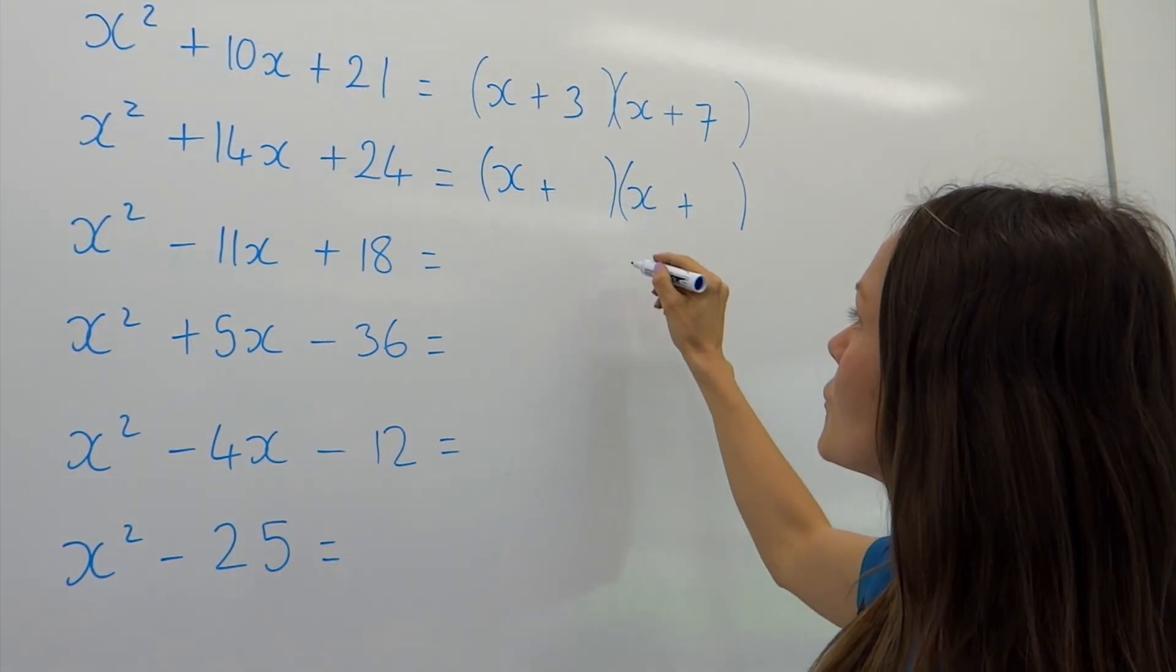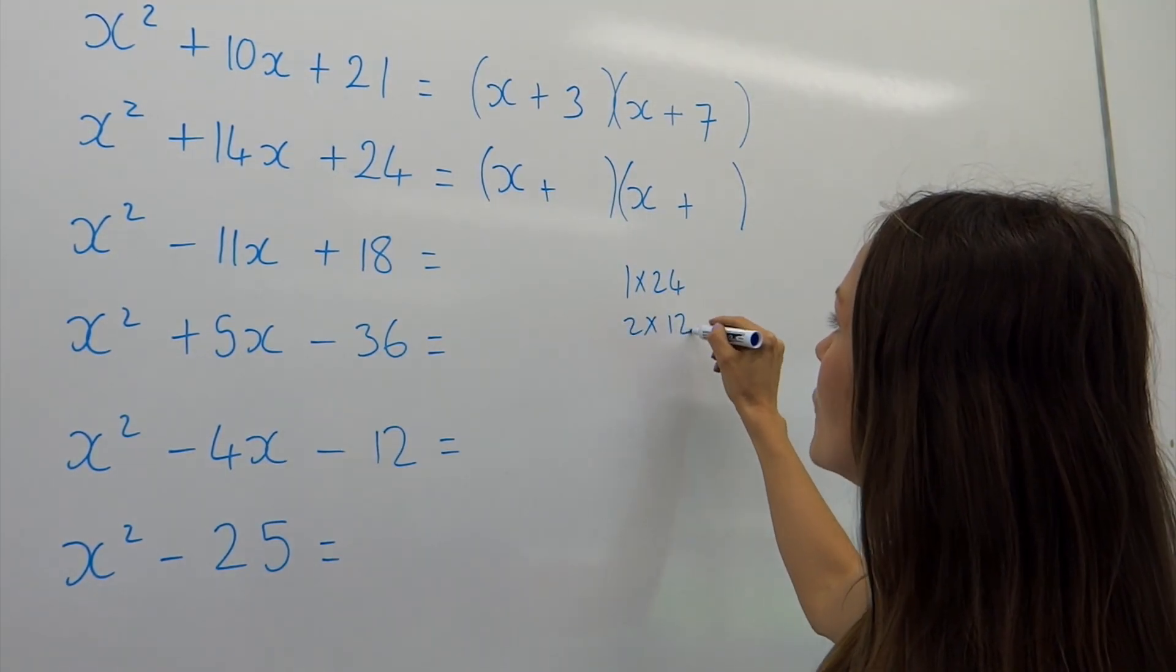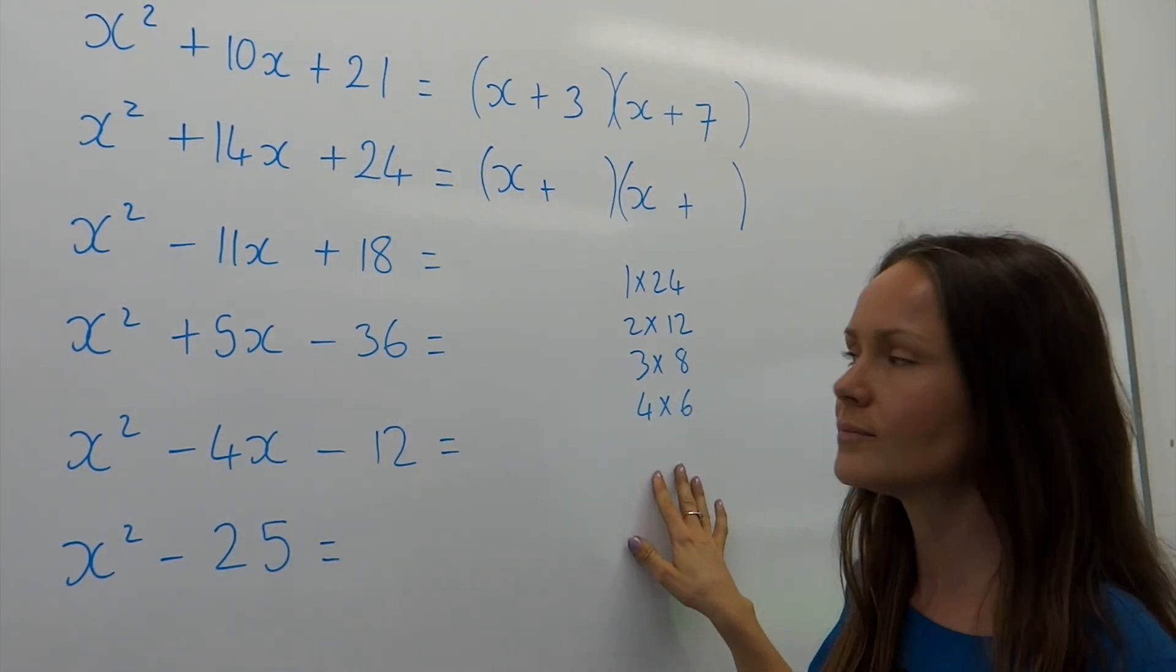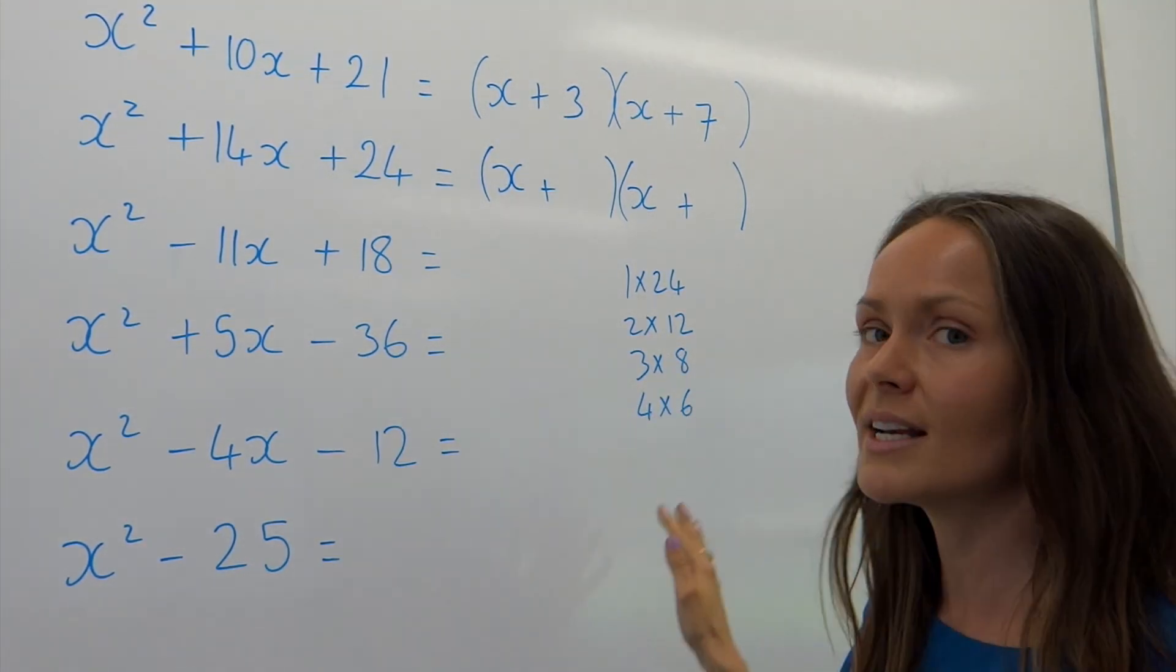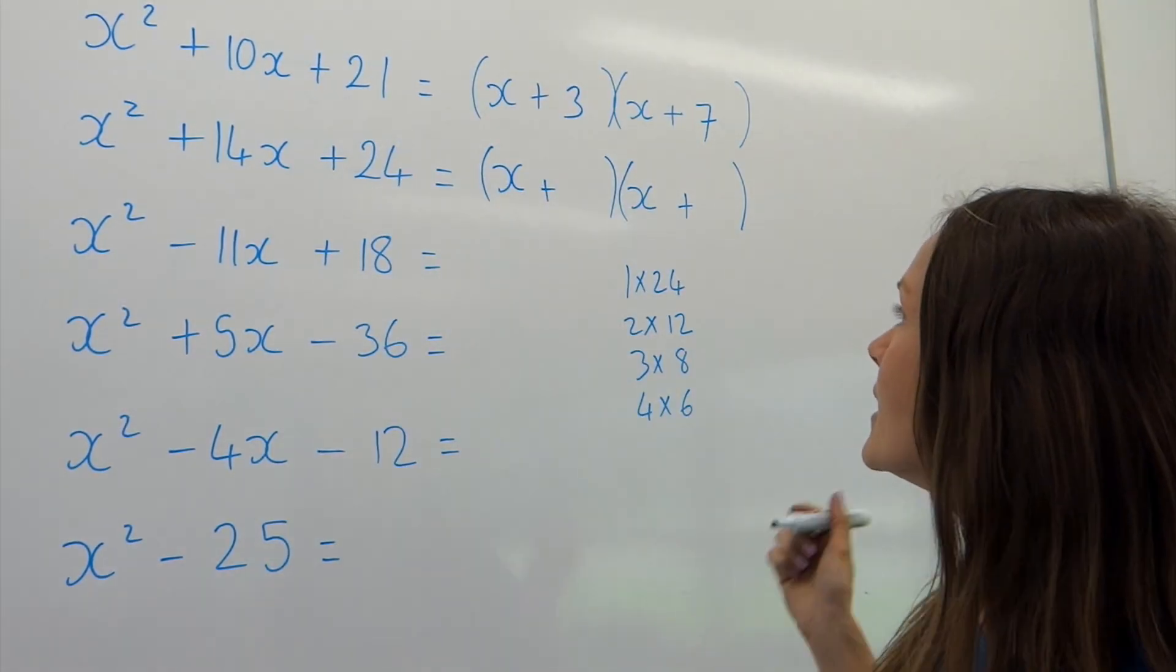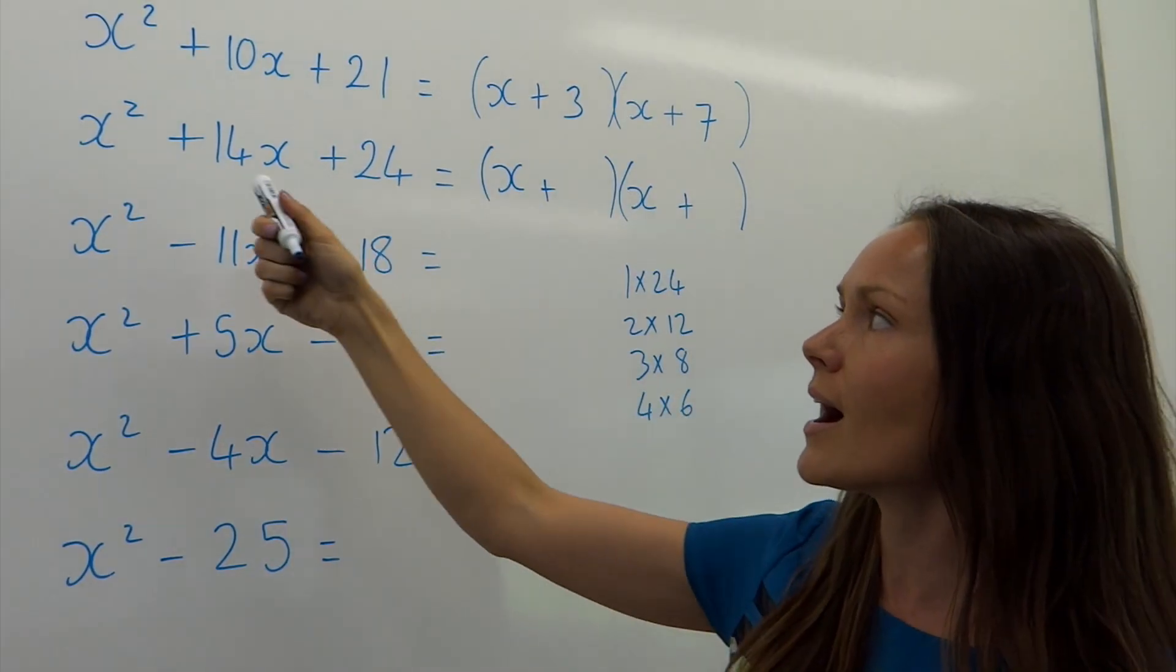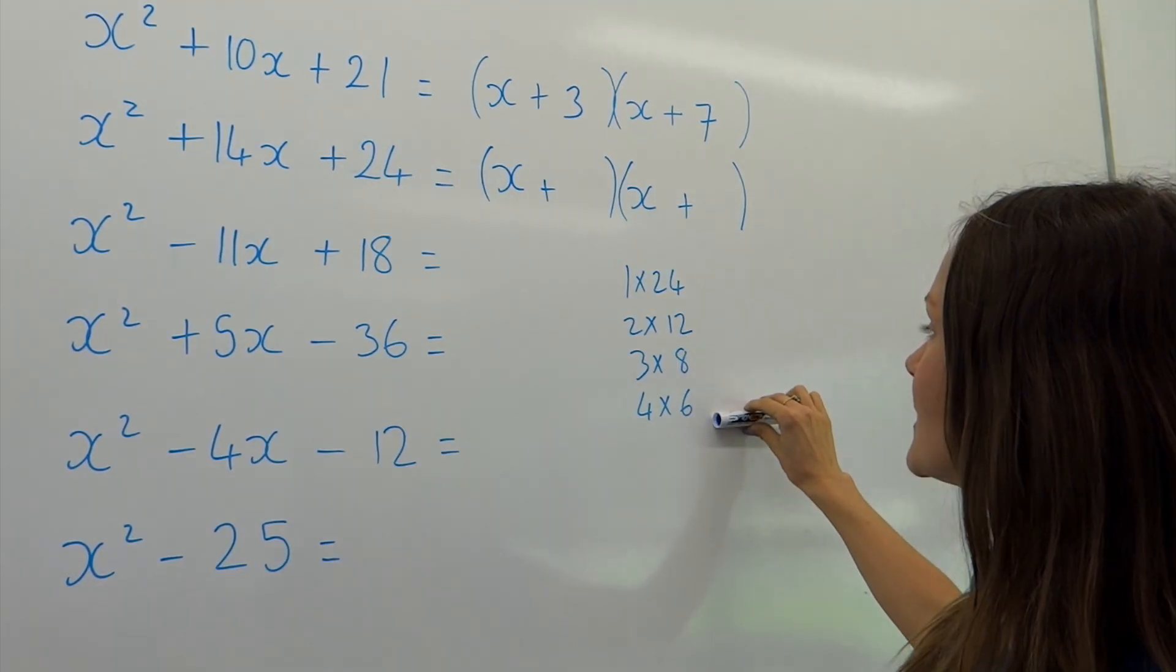So think of the factors of 24. We've got 1 times 24, 2 times 12, 3 times 8, 4 times 6. Those are all the factors of 24. So I just know those because I know my times tables. So it is really important to know your times tables because you'll be much quicker at doing these type of questions. Now remember, these two numbers multiply to give 24, but they must also add to give 14.